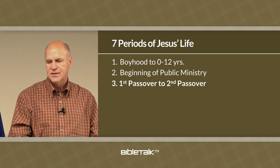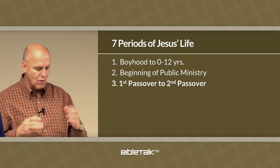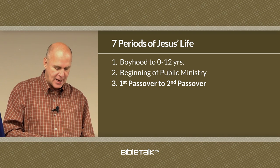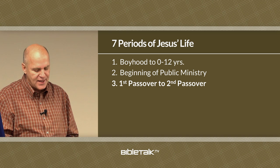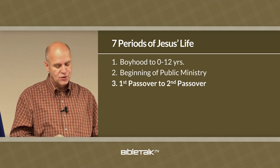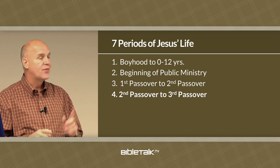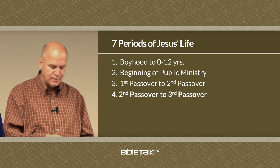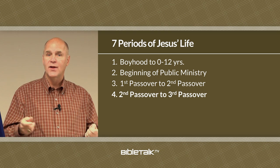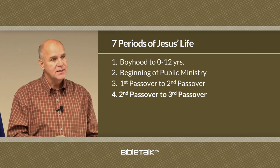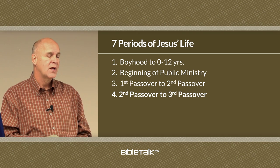The third period is the first Passover to the second Passover. Most of the information for this period is found in the book of John. Most of His ministry during this first Passover time is in Jerusalem, and then He departs from Jerusalem in the south and returns home in the north. The fourth period is the second Passover to the third Passover. Thirty-six events make up this section, where most of the action takes place in Galilee — the northern part of the country where Jesus originally grew up.